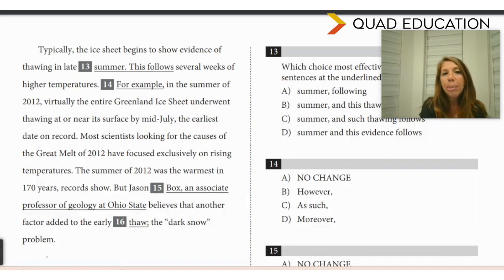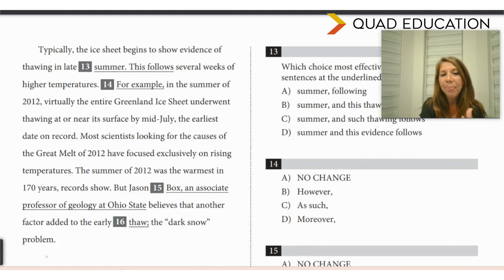Typically, the ice sheet begins to show evidence of thawing in late summer. This follows several weeks of higher temperatures. And we skipped the underlined portion. In the summer of 2012, virtually the entire Greenland ice sheet underwent thawing at or near its surface by mid-July, the earliest date on record.